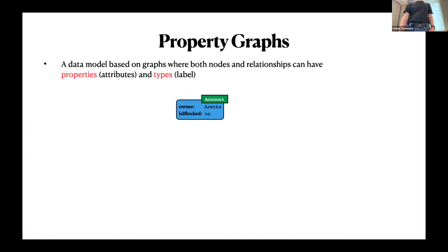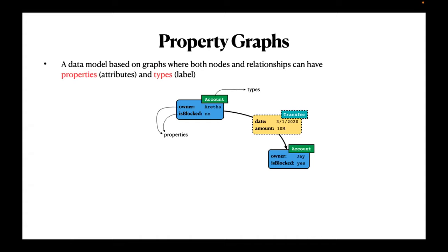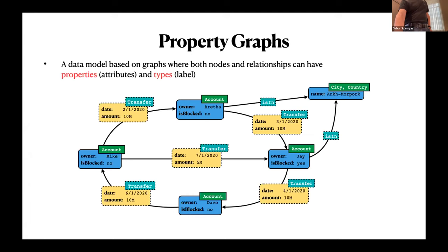We have graphs with both nodes and relations — you can have labels and properties. Here's a node: it's an account, it has an owner, and an attribute indicating whether it is blocked. Edges similarly have properties and labels or types. Here we have a whole graph that will be used as a running example: a bunch of people doing transfers between their accounts.